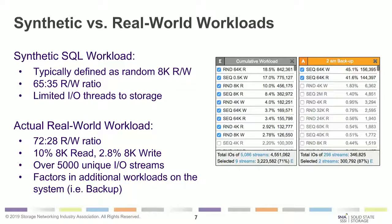You can see on the diagram that an actual real-world workload has a similar but different read-write ratio — 72-28, so it's a little more read-heavy. Only 10% of measured workloads were 8K reads and 2.8% were 8K writes, so there was a significant amount of additional read-write streams. Over 5,000 unique IO streams were actually observed while doing the workload, and you also need to factor in additional things going on in the system, such as backup.